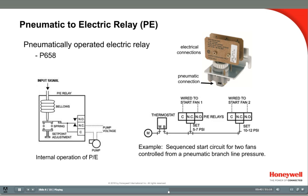In this example, a room thermostat's branch line pressure is switching two fans in sequence. The first fan starts with a rise in branch pressure at 7 psi, and the second fan starts at 12 psi. The fans will then shut off with a drop in pressure at 5 and 10 psi. This same controller's branch line could tee off to a damper or valve, creating control logic involving all functions of HVAC equipment.